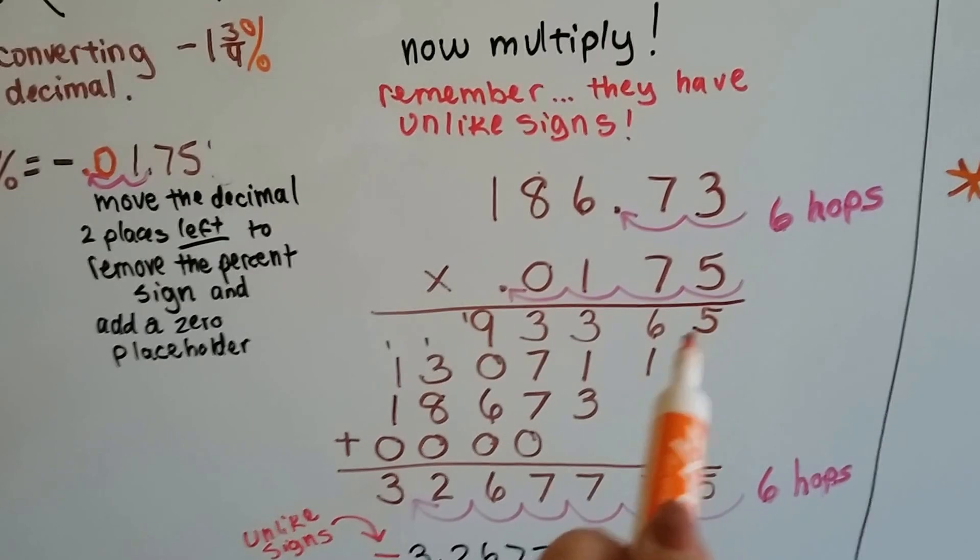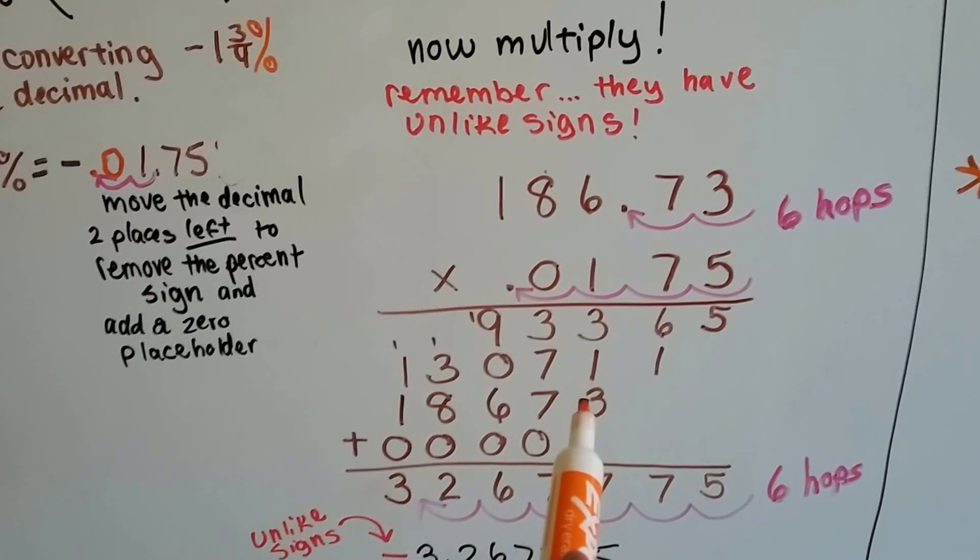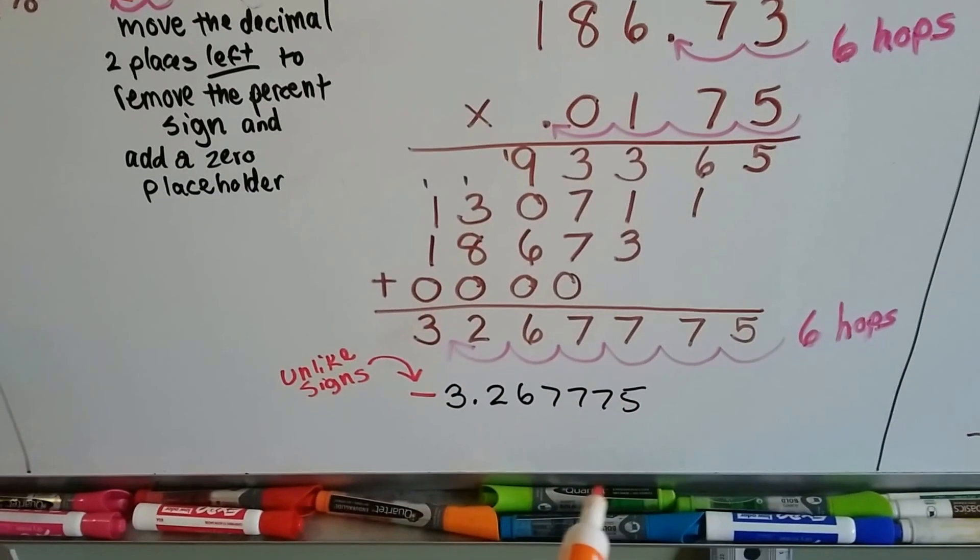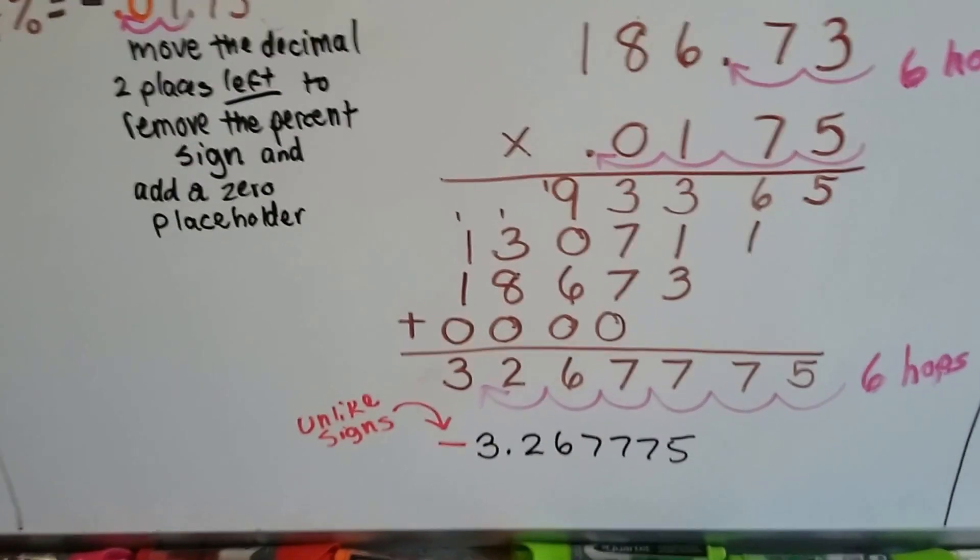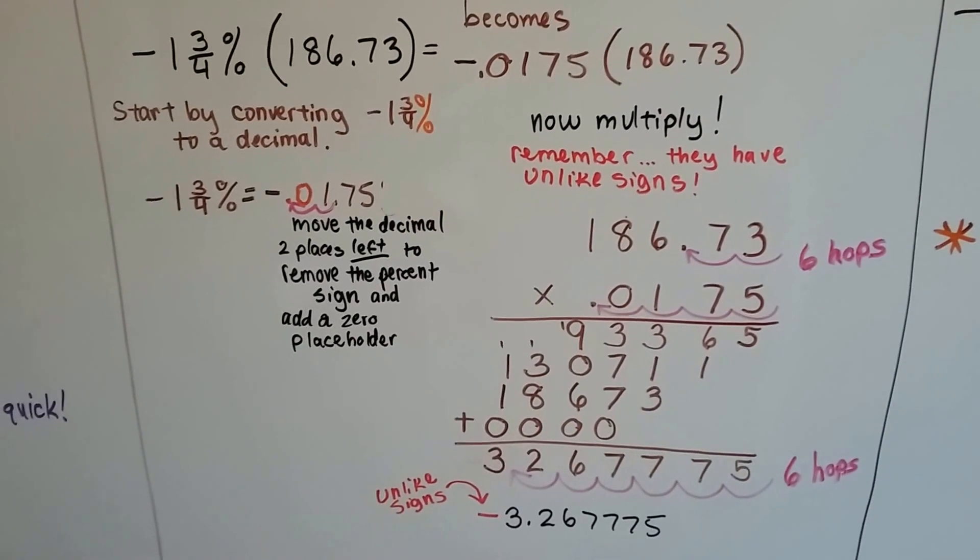First digit starts here. Second digit we multiply, the answer starts here. Third digit we multiply, the answer starts going here. We add it all up, and we end up with a negative three point two six seven seven seven five. Not that big of a deal. Just do one little step at a time.